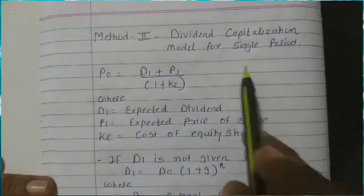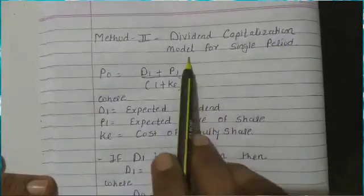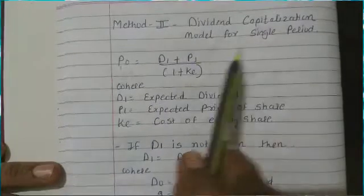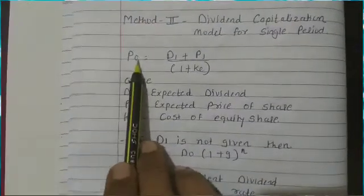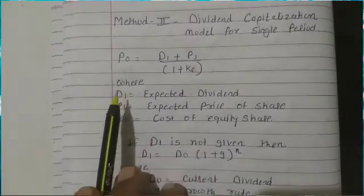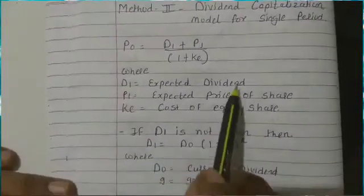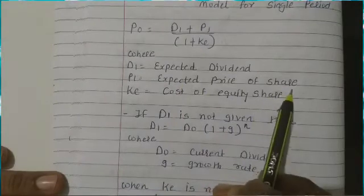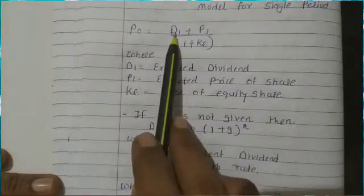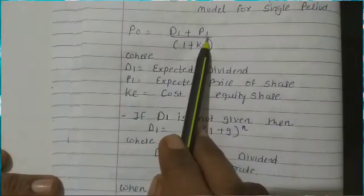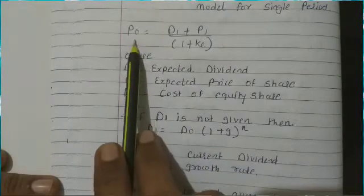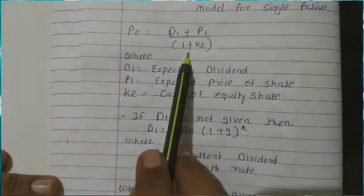Method number two is the dividend capitalization model for the single period. It is a formula for calculation of the price of the share. P0 is equal to D1 plus P1 upon 1 plus K, where D1 is the expected dividend, P1 is the expected price of the share, and K is the cost of equity share. When the expected dividend and expected price of the share are given, we use this formula: P0 = (D1 + P1) / (1 + K).